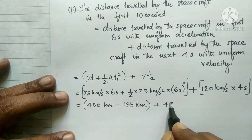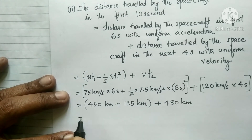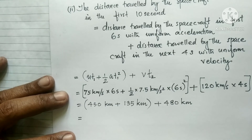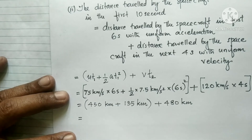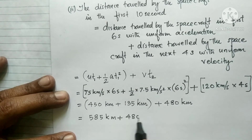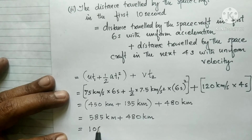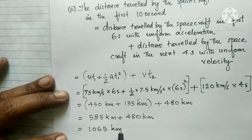So the total distance is 585 kilometers plus 480 kilometers, which equals 1065 kilometers.